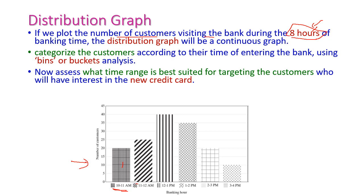This is 1, and 11 to 12 is 2, then 3, 4, 5, 6, 4 to 5 is 7, and 5 to 6 is 8, so total 8 hours. How many customers will visit during the particular time period? This time period is called as bin or bucket. By using this bin or bucket analysis, we can categorize the customers according to the time of entering the bank. What is bucket here? The time slot of the banking working hour. That is, the continuous 8 hours will be divided into 8 buckets.